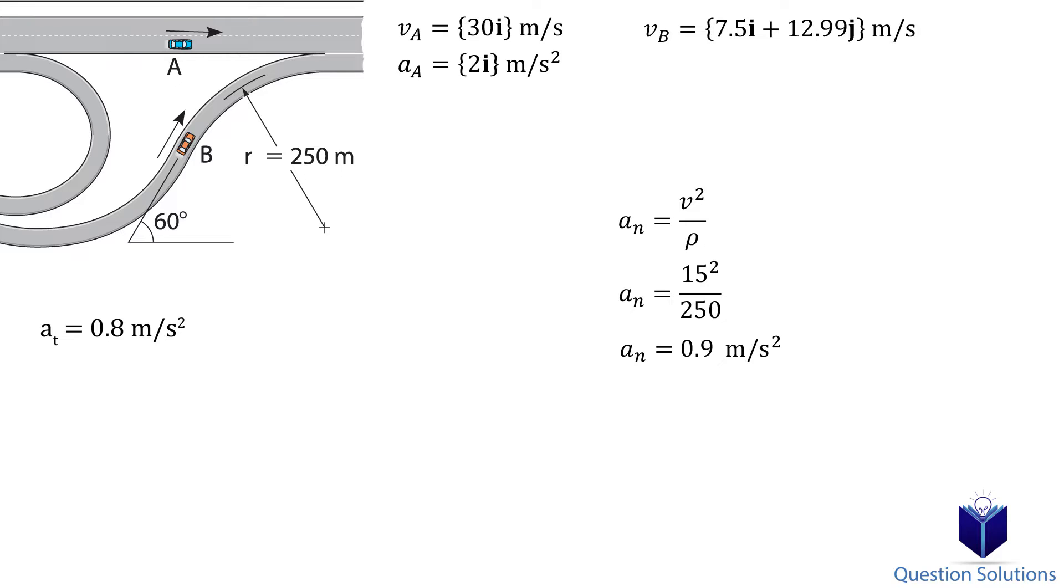Now we can express each of the accelerations in Cartesian form. So for each acceleration we will write the i component and the j component. For the tangential acceleration, since it's slowing down, the arrow is pointing backwards, which means both components are negative. For the normal acceleration, it's pointing to the center of the curve. So we have one component that is positive and another that is negative.